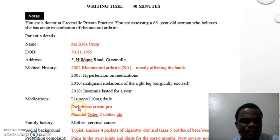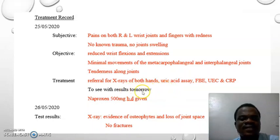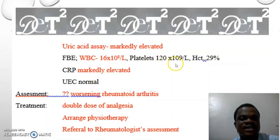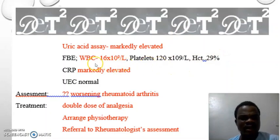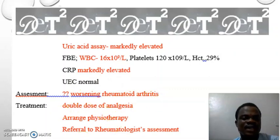For social background, the patient is a typist — already used in the introduction — and she smokes and drinks alcohol, which we'll include as these are risk factors for rheumatoid arthritis and other arterial diseases. We also add the presenting complaint and events from yesterday. The only item excluded from yesterday's events is the note about awaiting results — many candidates mistakenly include this, but it is irrelevant and reduces marks for conciseness. For today's investigations, I removed platelet and hematocrit data, keeping only the full blood count since infection can precipitate rheumatoid arthritis symptoms.